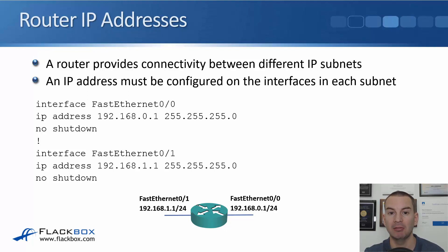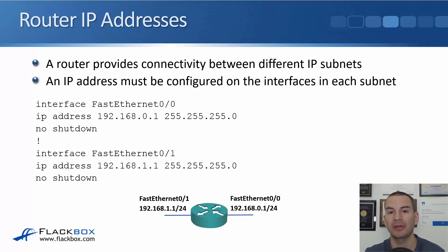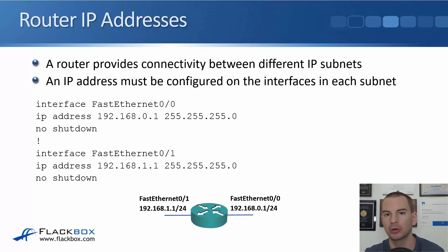Obviously the IP addresses need to be in different subnets on different interfaces. From global configuration mode we go to interface configuration mode: 'interface fastEthernet0/0', then 'IP address 192.168.0.1 255.255.255.0'. The IP address and subnet mask are both entered with one command, and you must enter the subnet mask in full dotted decimal notation — you can't enter slash 24 in IOS.